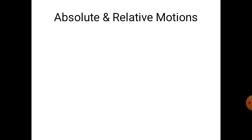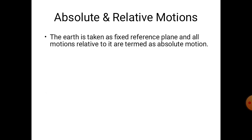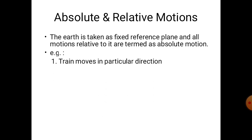The first important point is absolute and relative motions. In order to represent the motion of any body, a fixed reference plane is required. The earth is taken as a fixed reference plane and all the motions relative to it are termed as absolute motion. We will take one example: a train moving in a particular direction. The motion of this train relative to earth is known as absolute motion.